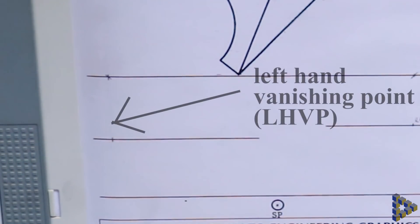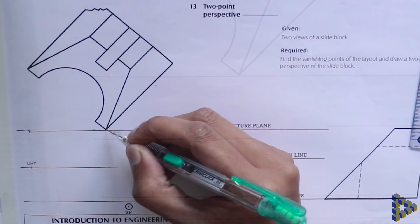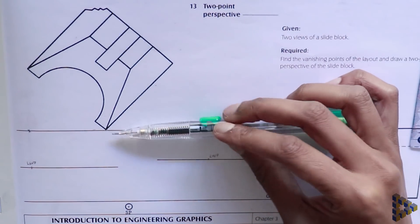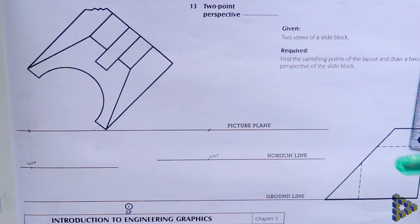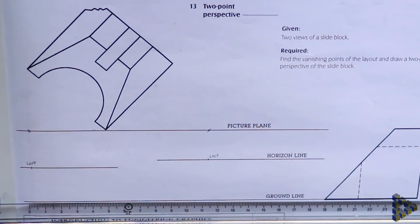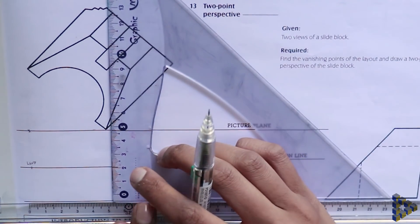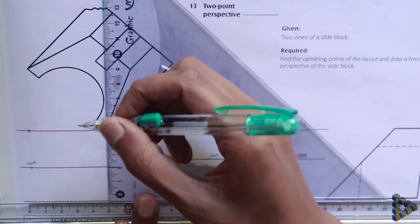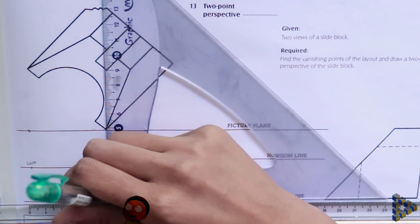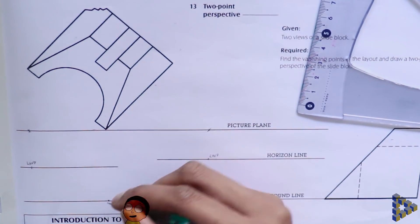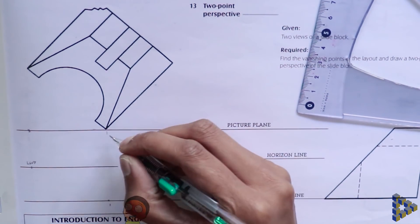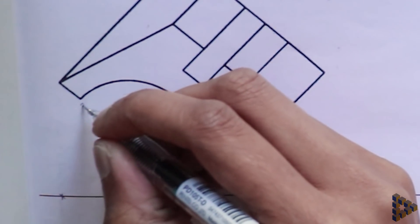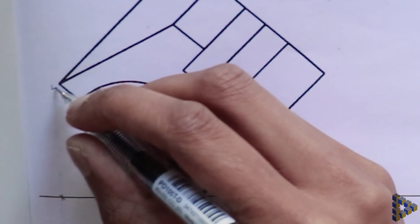Next, I identify if there is a true point or true length in my drawing. In this case, we have a true point, as the point touching the plan view corresponds to an angled line. If the observer looks at this angled line, it won't appear to be its true size and shape. For this reason, there is no true length line.